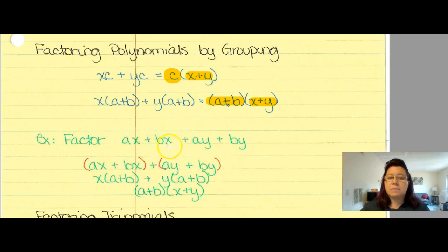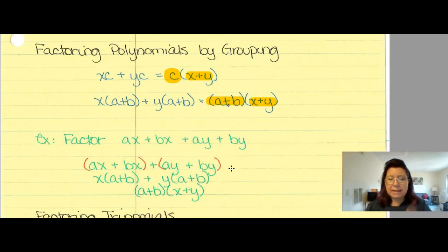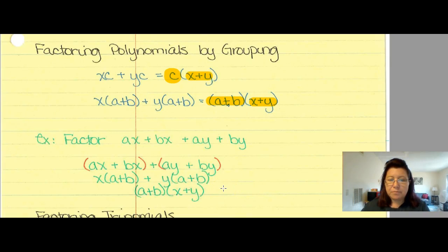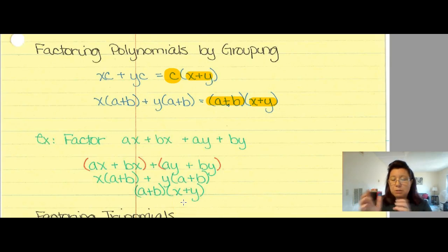Let's try and factor ax + bx + ay + by. I'm going to group these — take a couple of terms and group them together. I could have reordered it as ax + ay + bx + by, but it doesn't matter. In the first block, they have an x in common, so I factor out x. In the second group, they have a y in common, so I factor out y. Now I have x(a + b) + y(a + b). They both have (a + b) in common, so I factor that out and get (a + b)(x + y). Factor by grouping helped me see it reduces to just two factors.